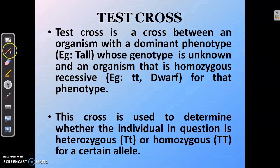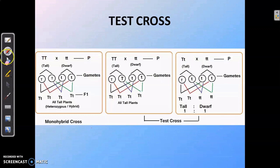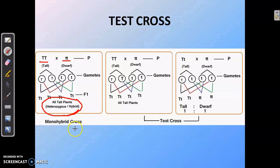A test cross is used to determine whether the individual in question is heterozygous or homozygous in nature. In a normal monohybrid cross, a pure tall plant is crossed with a pure dwarf plant and all offspring obtained are tall but heterozygous. If we want to know whether these tall plants are homozygous tall or heterozygous tall, we need to cross them with a recessive parent — that is, with a dwarf plant. Let us look at two different types of such crosses.